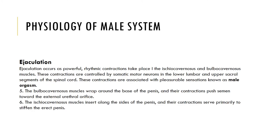Ejaculation is a powerful series of rhythmic contractions that cause semen to be ejected from the body. The muscles of the penis undergo rapid rhythmic contractions, propelling semen at a high rate of speed. The entire ejaculatory event is referred to as a climax or orgasm.